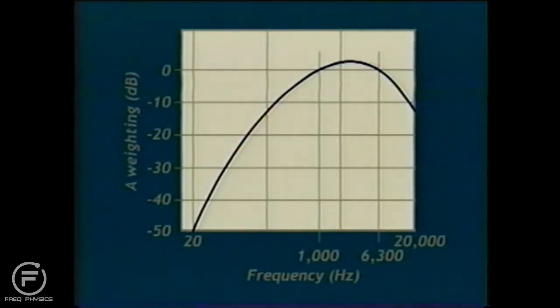A-weighting is a response function that spans the audible frequency range. This weighting assigns to each frequency a weight that is related to the sensitivity of the ear at that frequency. Frequencies to which the human ear is less sensitive are weighted less than those to which the ear is more sensitive. The A-weighting curve emphasizes frequencies in the 1,000 to 6,300 Hz range and deemphasizes frequencies out of that range.